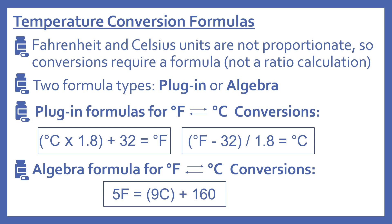The plug-in formulas for Fahrenheit and Celsius conversions — there are two of them. Celsius times 1.8, in parentheses, plus 32 will give you degrees Fahrenheit. And to calculate degrees Celsius, you take the Fahrenheit temperature minus 32, in parentheses, then divide by 1.8. That gives you degrees Celsius.